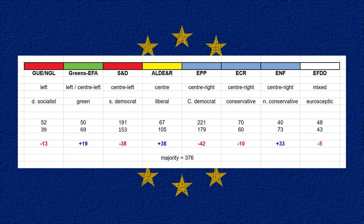Looking at the seat numbers: the first row are the 2014 results on the day of the election, not accounting for subsequent changes. The second row are the 2019 results, slightly adjusted from official results. I'm giving one extra seat to GUE-NGL for the German Animal Protection Party, taking away three seats from the ECR — the Danish People's Party and two from the Finns Party — because they're going to join the ENF.